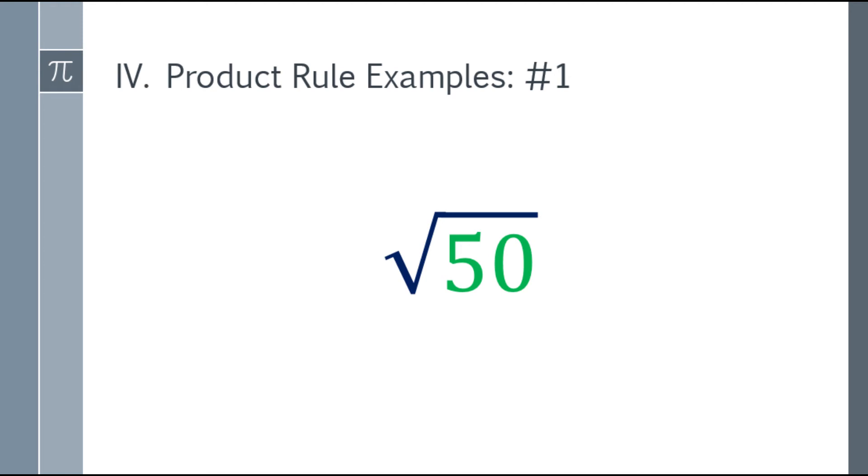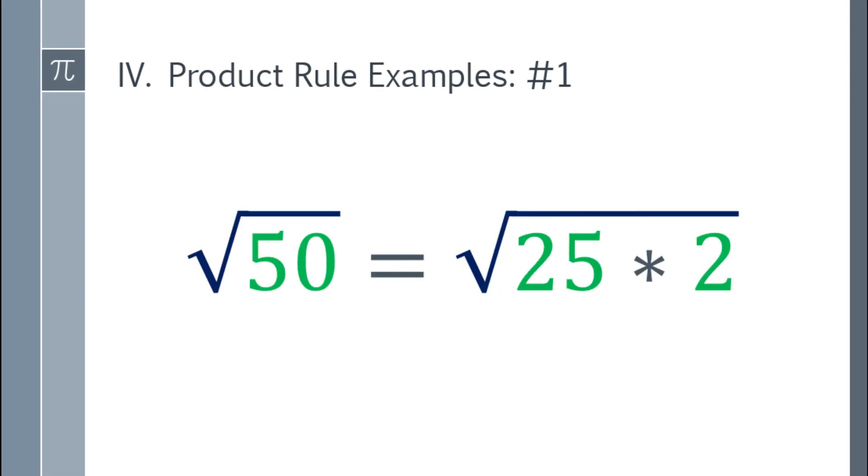Paano yun, sir? Kunin mo yung factors ng 50 na may perfect square. So that will be 25 times 2, kasi ang 25 is a perfect square, right? The square root of 25 kasi is 5.